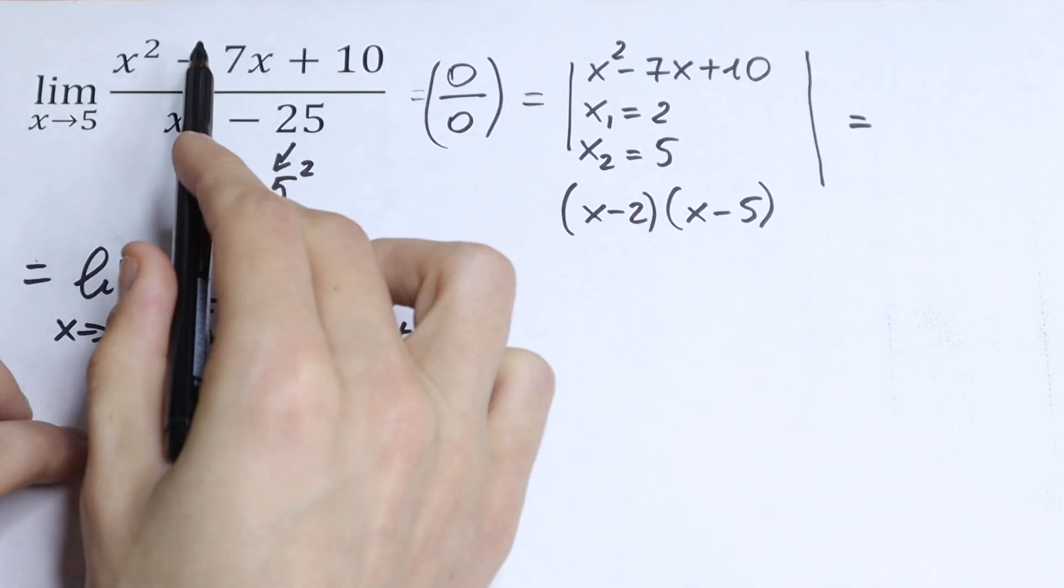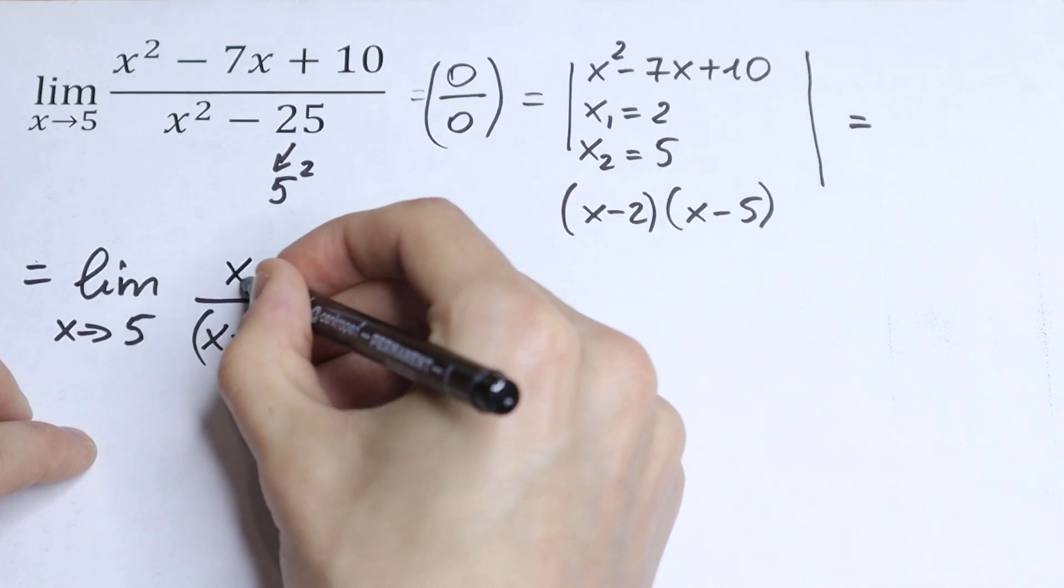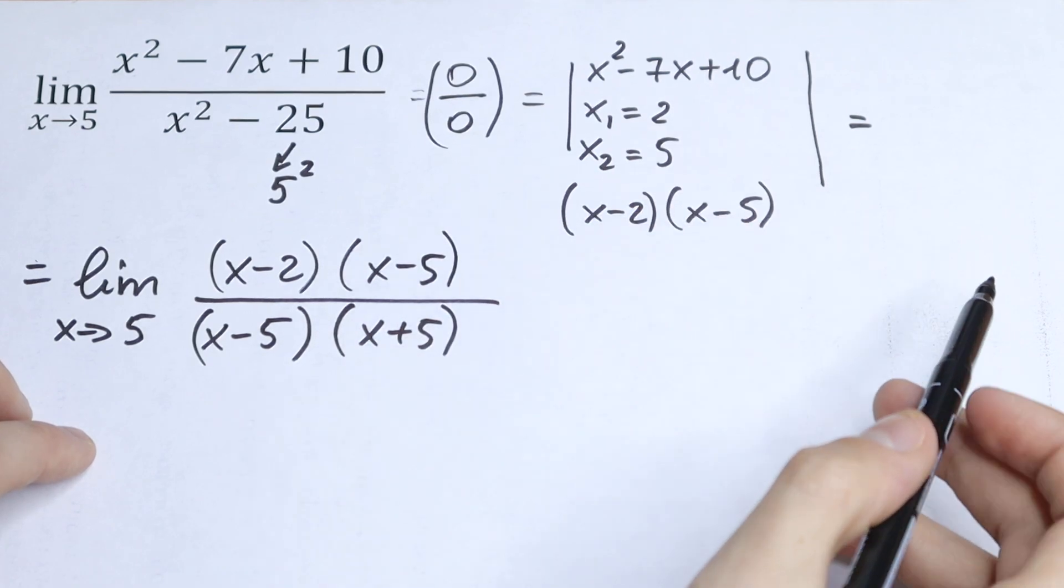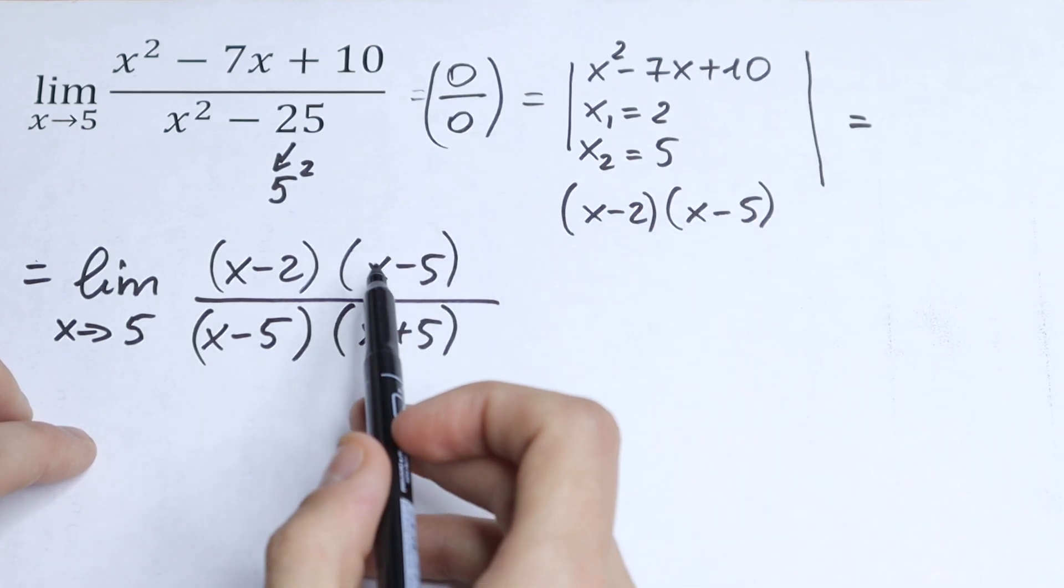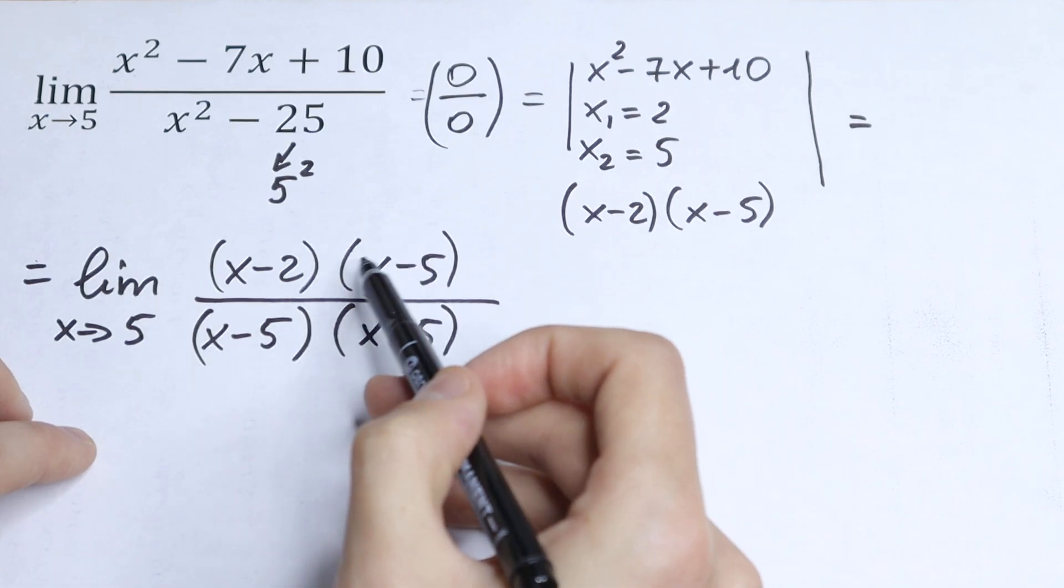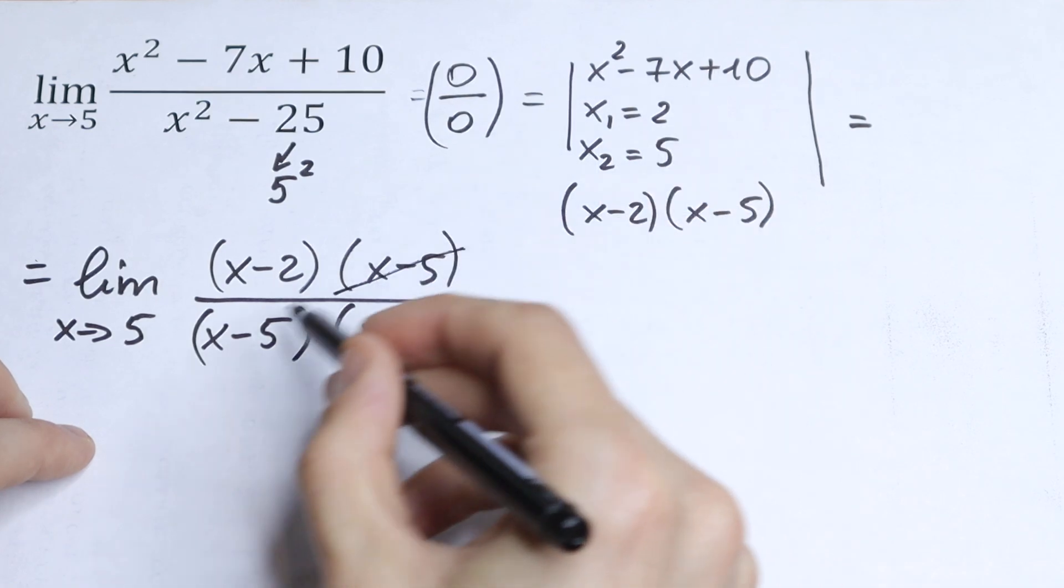In the numerator we have (x minus 2) times (x minus 5). This is really good because we can cancel x minus 5 from numerator and denominator. This expression gives us an undefined answer, so it's good to cancel it.